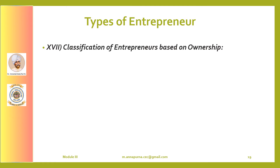The next set of entrepreneurs is categorized based on ownership. A private entrepreneur sets up a business enterprise as an individual, is the sole owner, and bears the entire risk involved. A state entrepreneur is when a trading or industrial venture is undertaken by the state or government. A joint entrepreneur is when a private entrepreneur and the government jointly run a business enterprise.